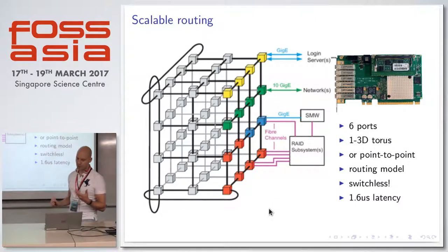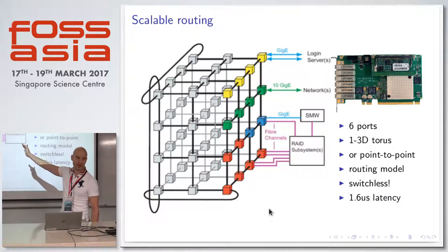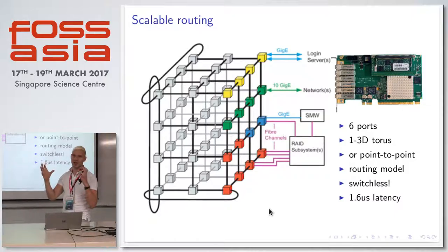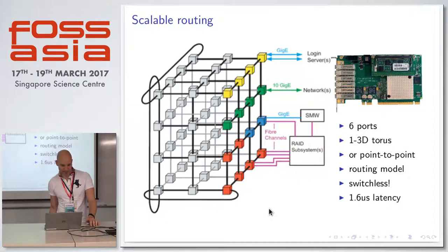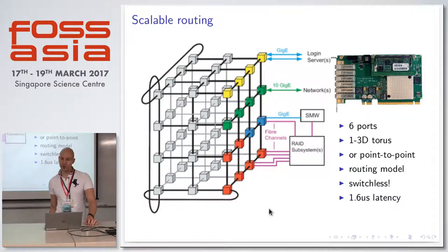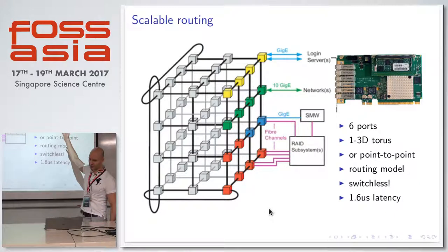You can extend that beyond a simple 2D network into a 3D network like this, and you can have such a large cache-coherent system, with each of these squares being a server in a rack. In this case, 3 by 4 by 4. To do that, you need lots of ports in your cache-coherent interconnect. This is one of our older ones here that has six ports.